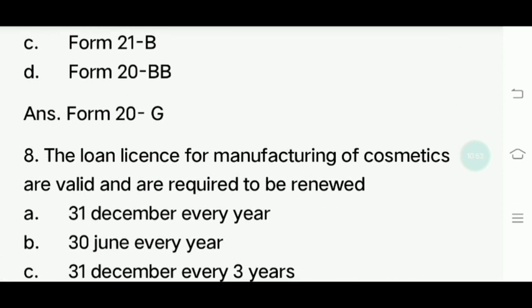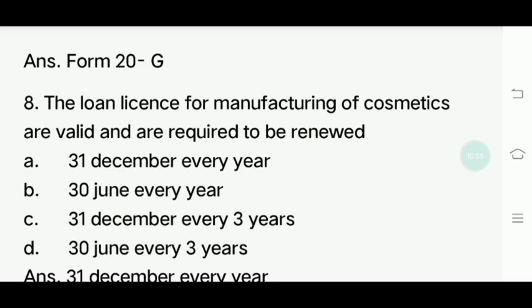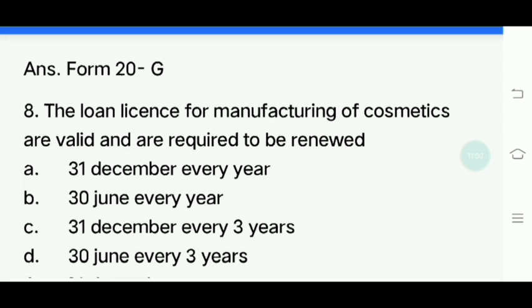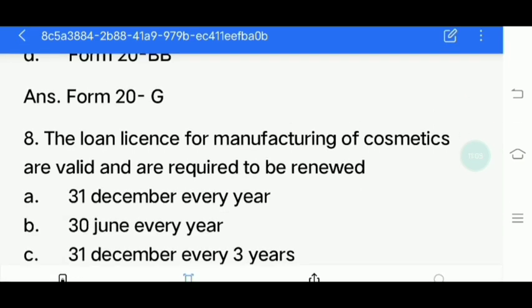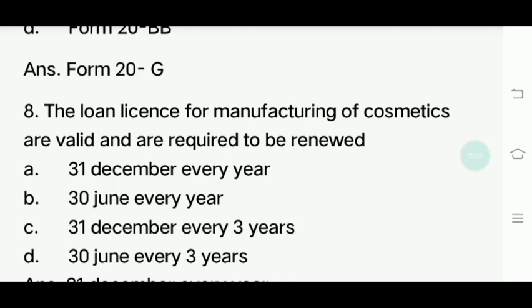Eighth question: The loan license for manufacturing of cosmetics are valid and are required to be renewed when? Options: 31 December every year, 30 June every year, 31 December every 3 years, 30 June every 3 years. Answer is 31 December every year.